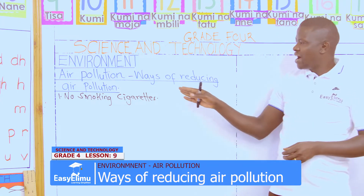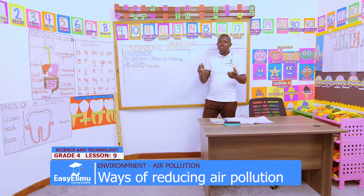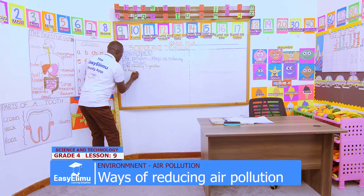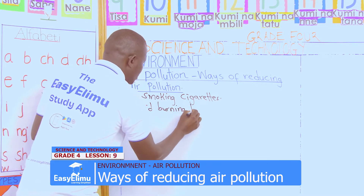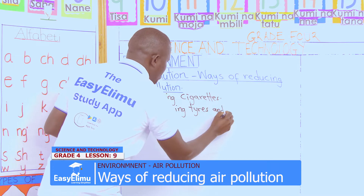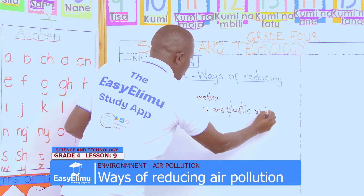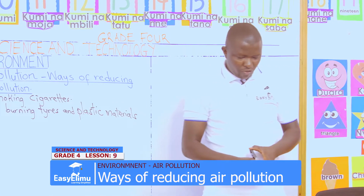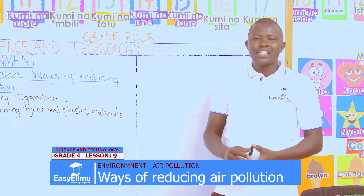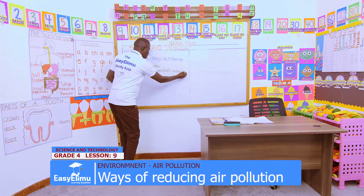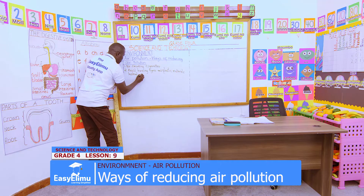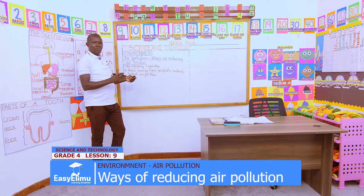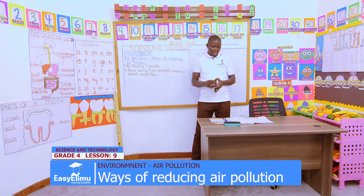Another way to reduce air pollution is to avoid burning tires and plastic materials. Instead of burning them, we should recycle them. If they are recycled, that is better, because we will not pollute the environment and we will have reduced air pollution.